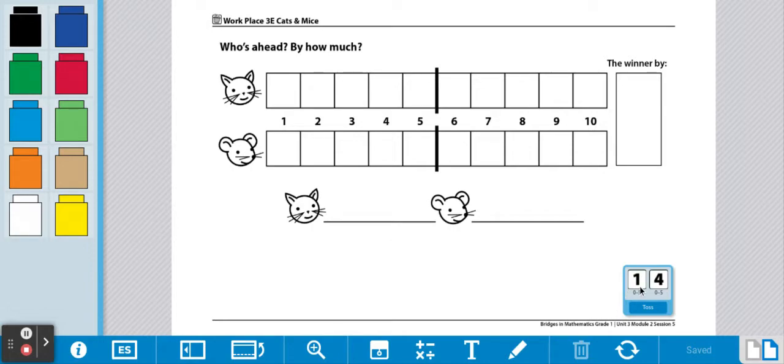So we have 1 and 4. We're going to record that on the cat's side. 1, 2, 3, 4, and one more makes 5.